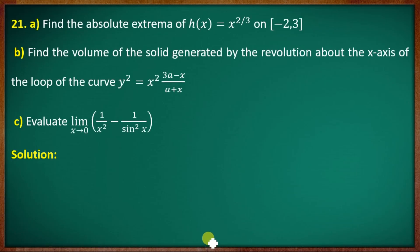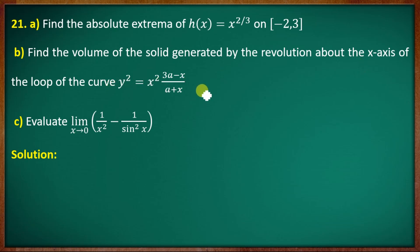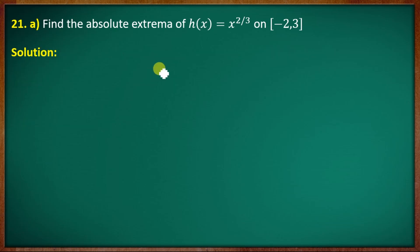Next question, the 21st question: find the absolute extrema of h of x equal to x raised to 2 by 3 on the interval minus 2 to 3. To find the absolute maximum and minimum values, we know h of x equal to x raised to 2 by 3. Taking the derivative for critical points: h dash of x equals 2 by 3 times x raised to minus 1 by 3. x is not equal to 0.